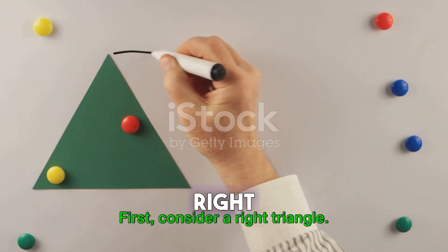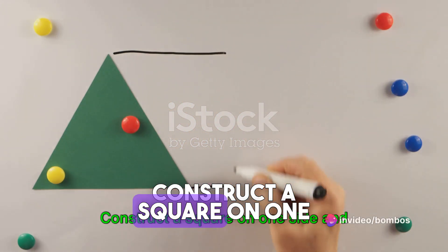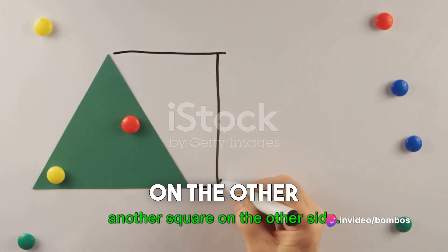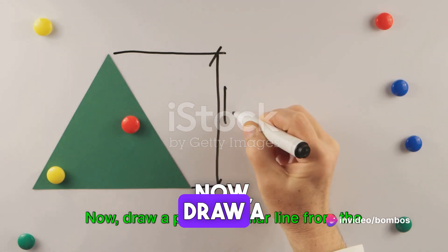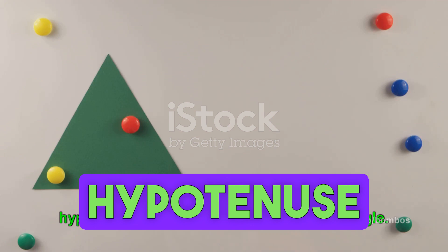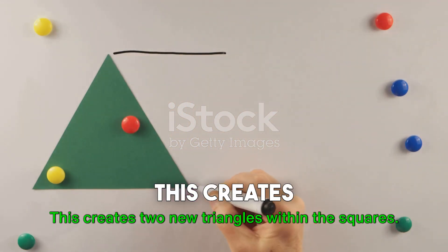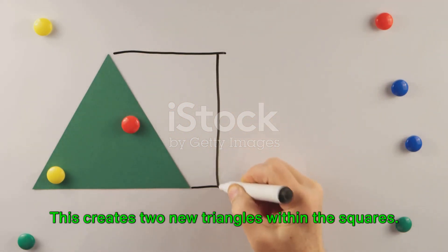First, consider a right triangle. Construct a square on one side and another square on the other side. Now, draw a perpendicular line from the hypotenuse to the adjacent side of the triangle. This creates two new triangles within the squares.